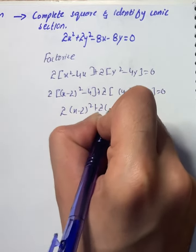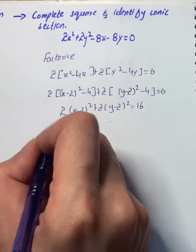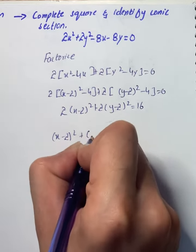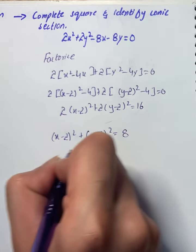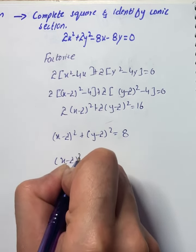So we have 2(x - 2)² + 2(y - 2)² = 16. We'll take (x - 2)² + (y - 2)² = 8.